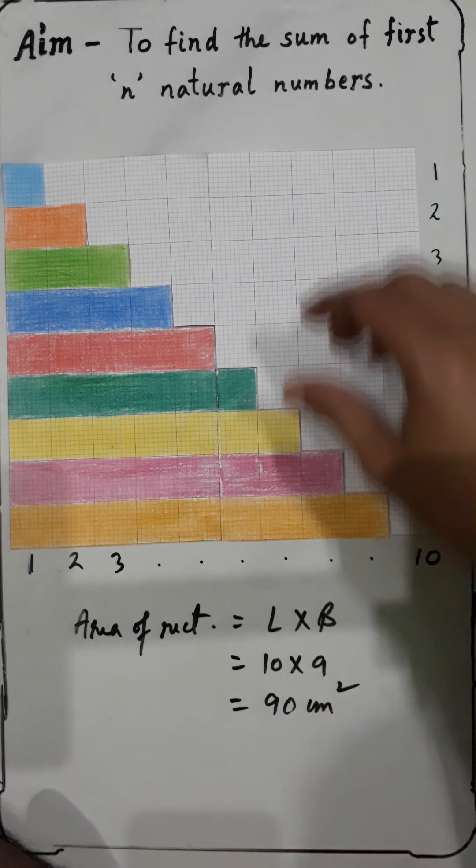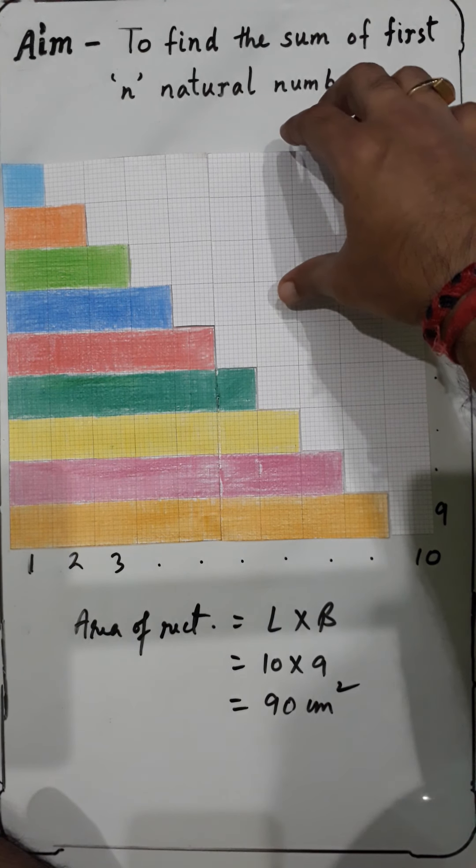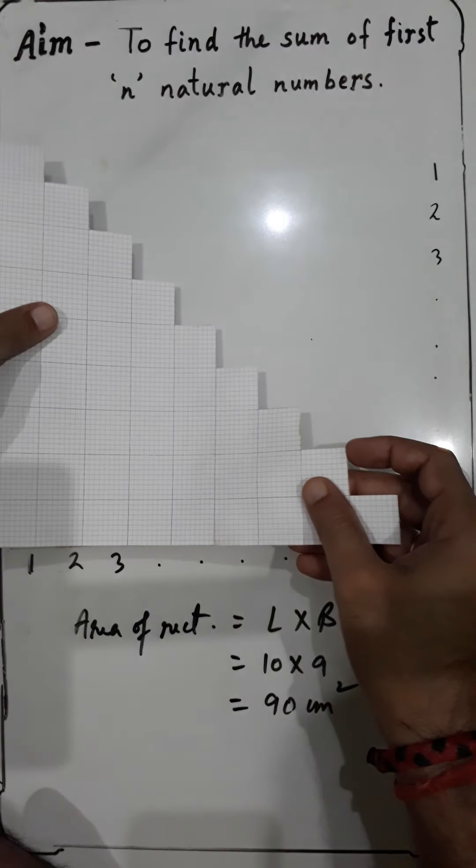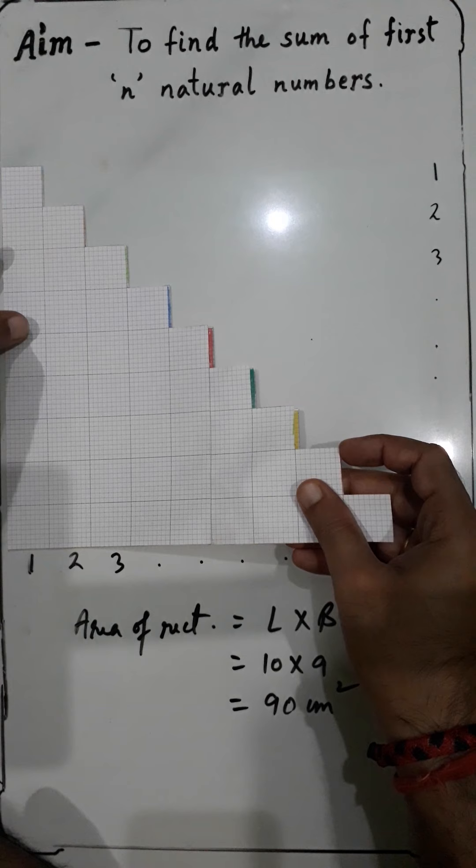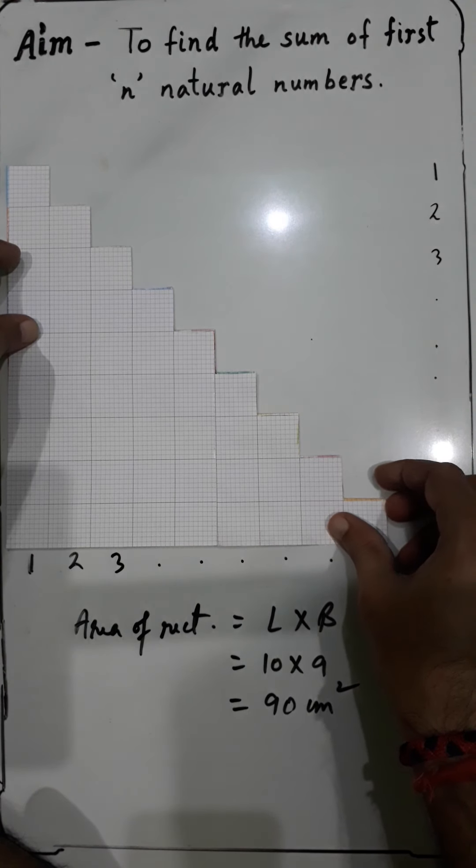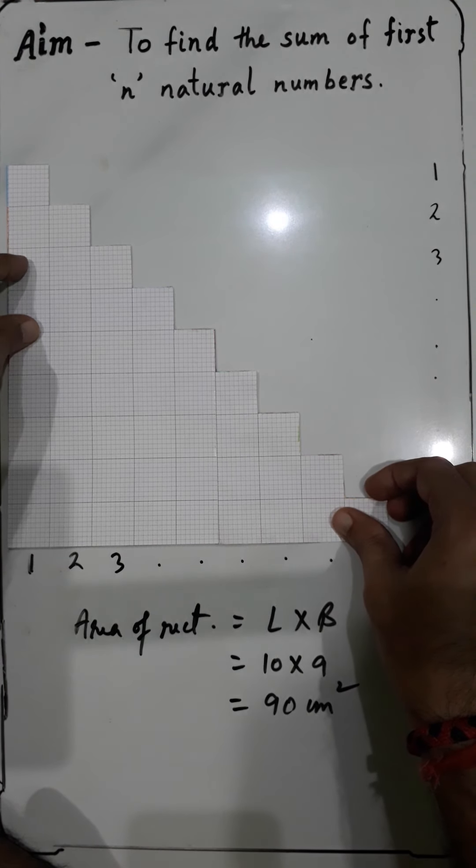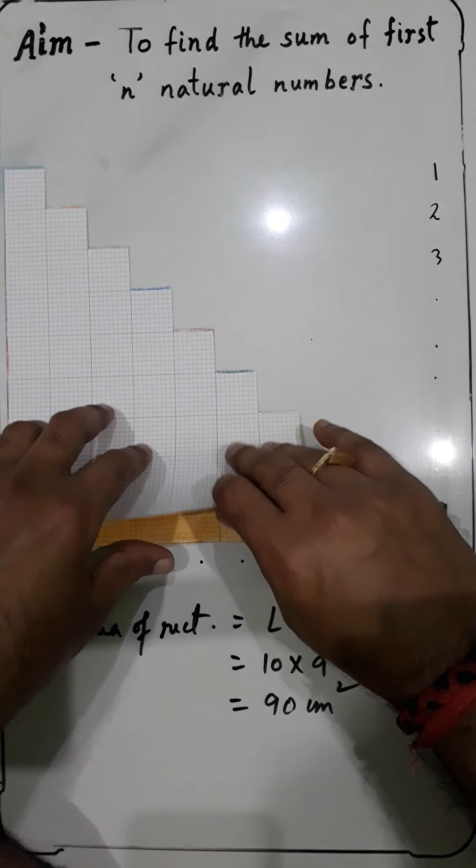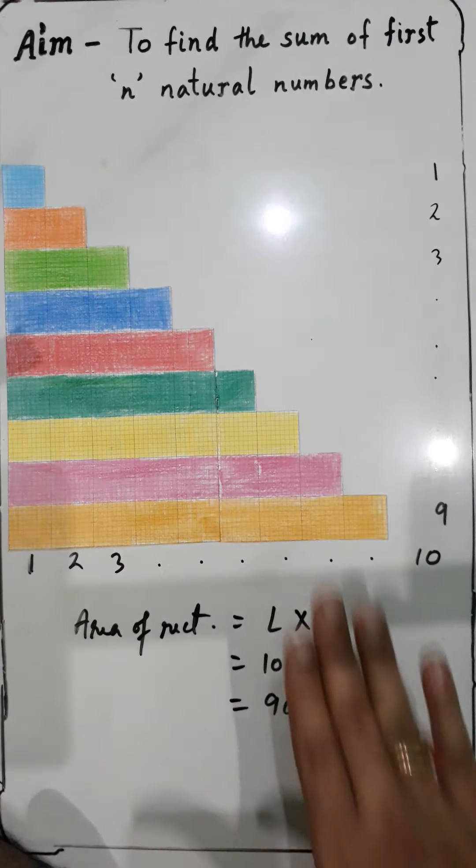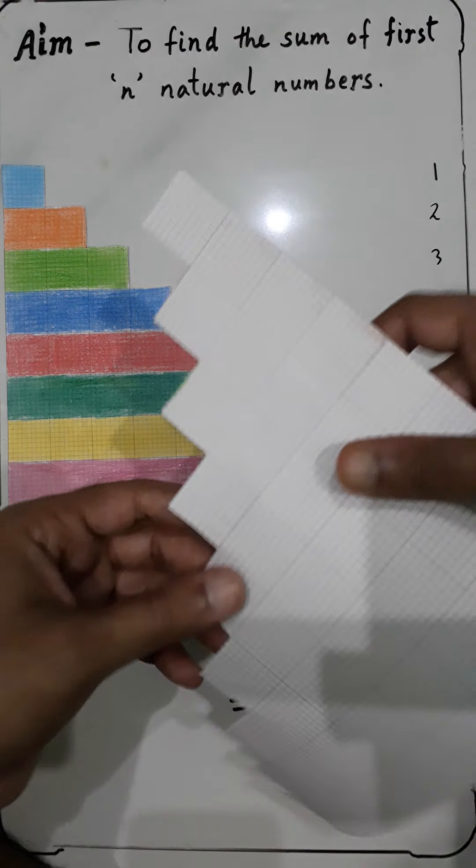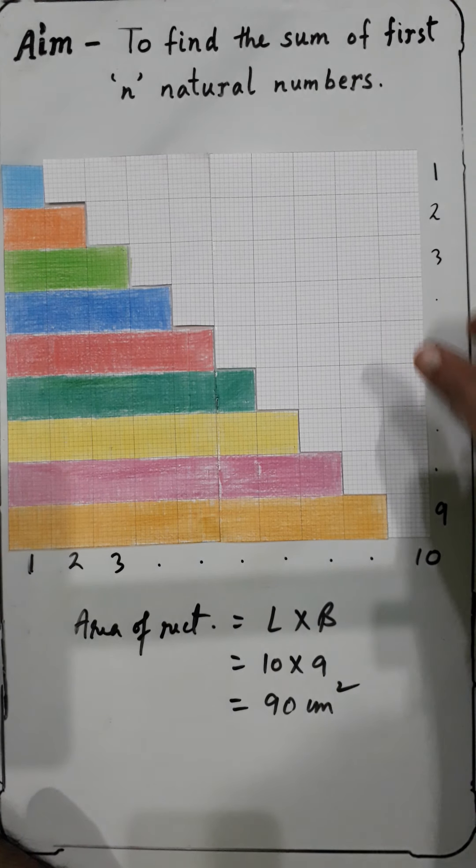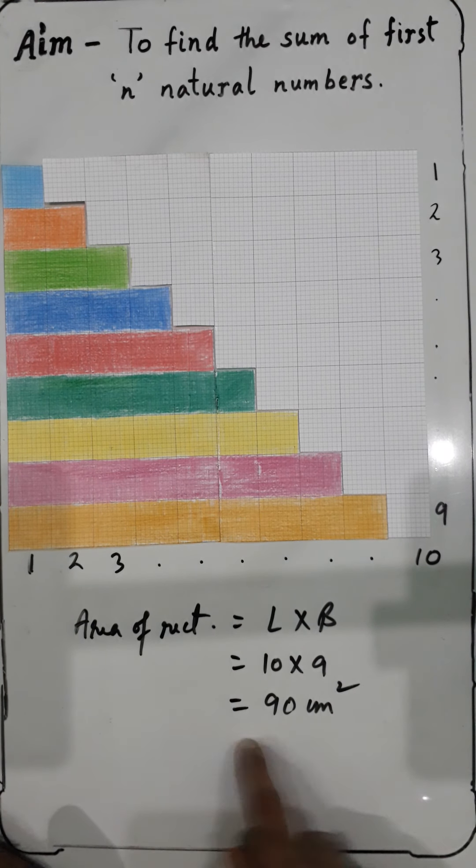Let us see how. If you place the other half over this, you find that it exactly covers this one. So it means that the colored portion is half of the rectangle. This rectangle is 90 centimeters squared, so the sum of...